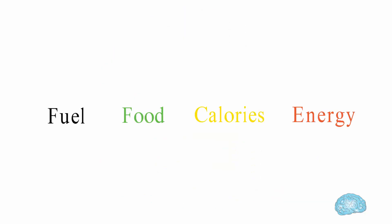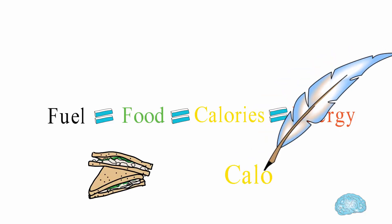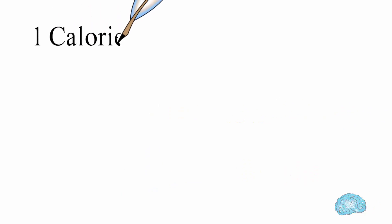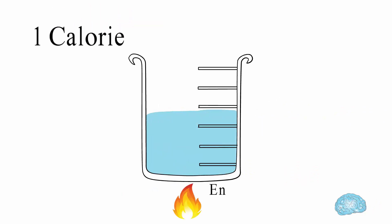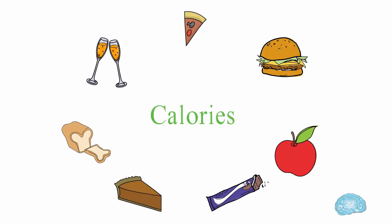Fuel equals food, equals calories, equals energy. Yes, the food we eat is measured in a unit called calories. One calorie, also called a large calorie, is defined as the amount of energy it would take to raise the temperature of one kilogram of water by one degree Celsius. Everything we consume has calories. The average pizza slice has about 272 calories, a piece of bread has about 78 calories, and an apple has about 52 calories.